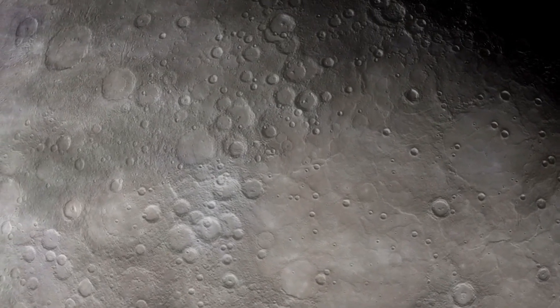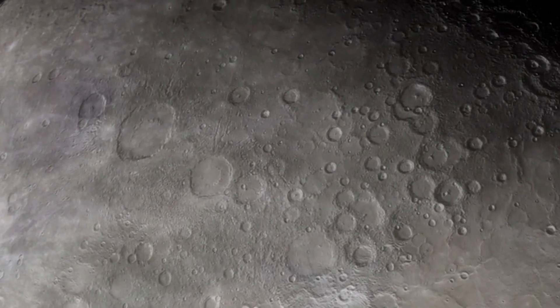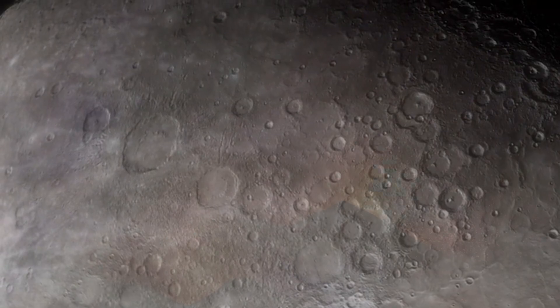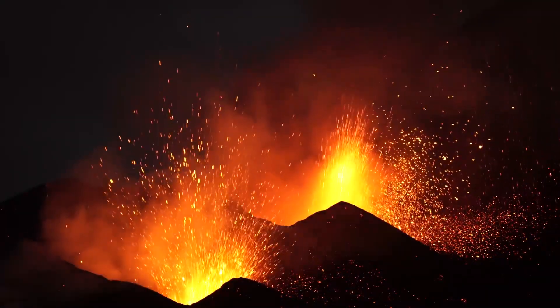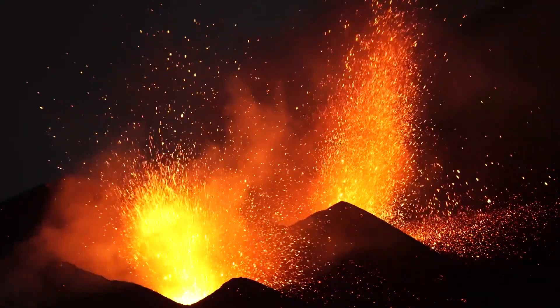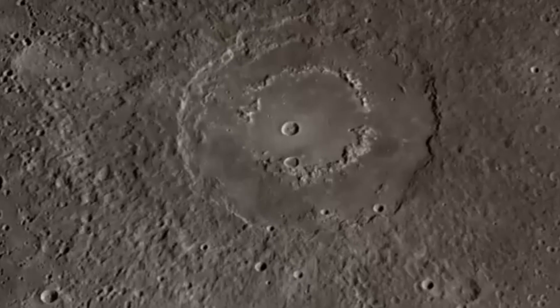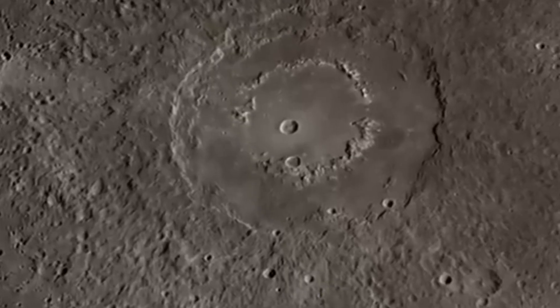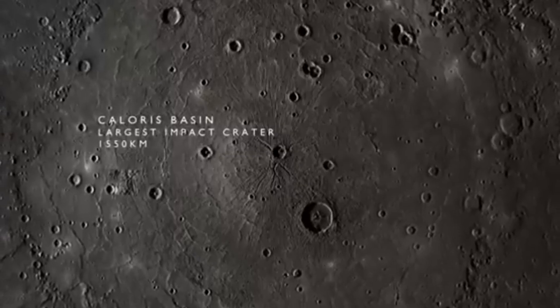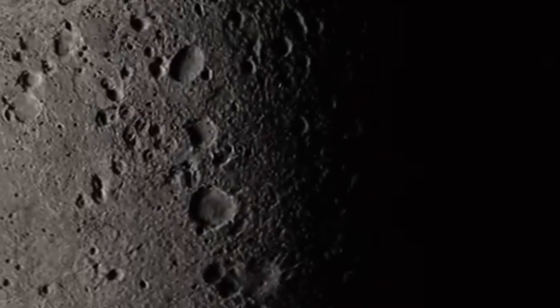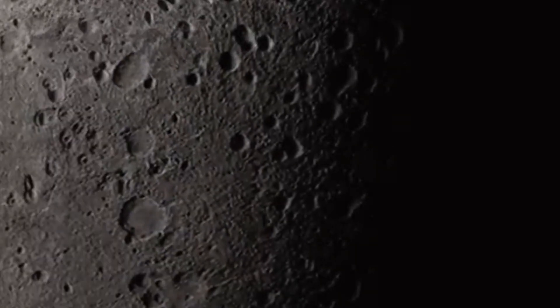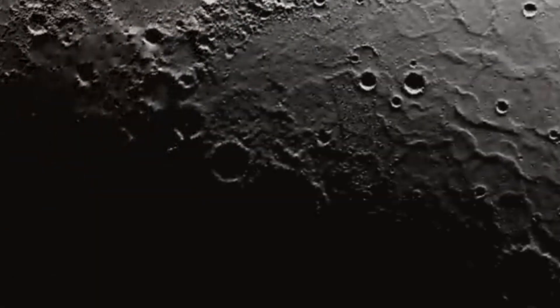In 2012, the Messenger spacecraft discovered evidence of ancient volcanic activity on Mercury's surface. The spacecraft identified unusual shallow depressions known as hollows, which appear to have formed when volatile elements rose to the surface. These hollows indicate that Mercury's core may have contained more volatile materials than previously believed.